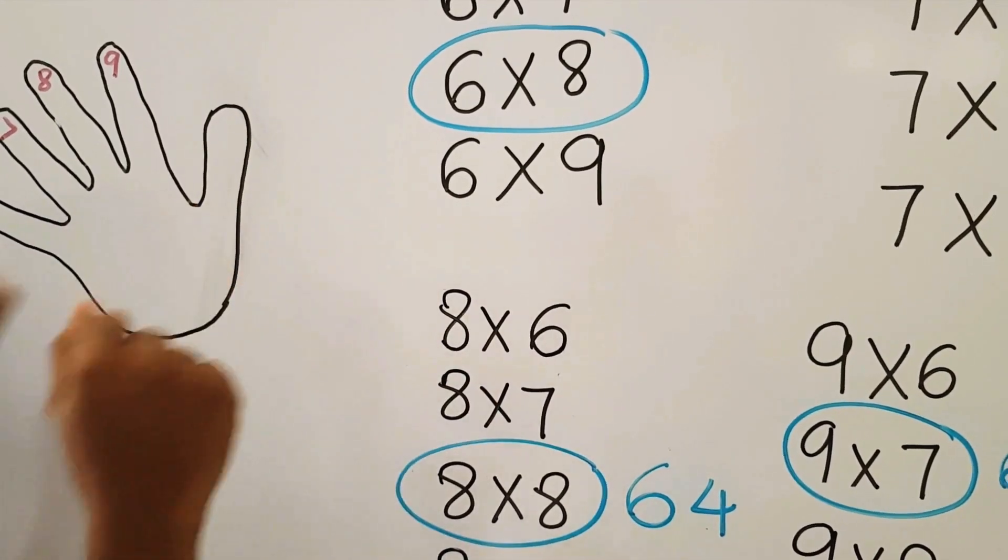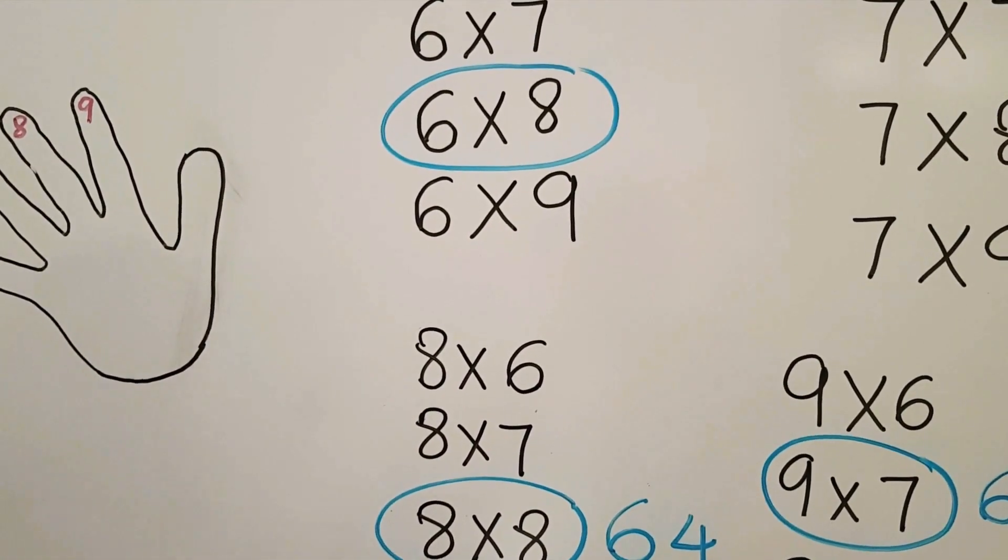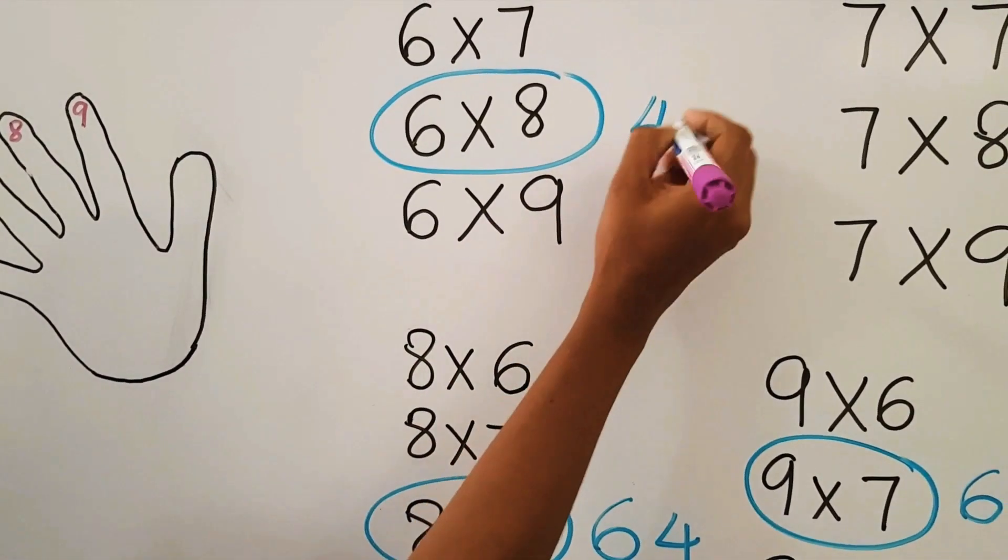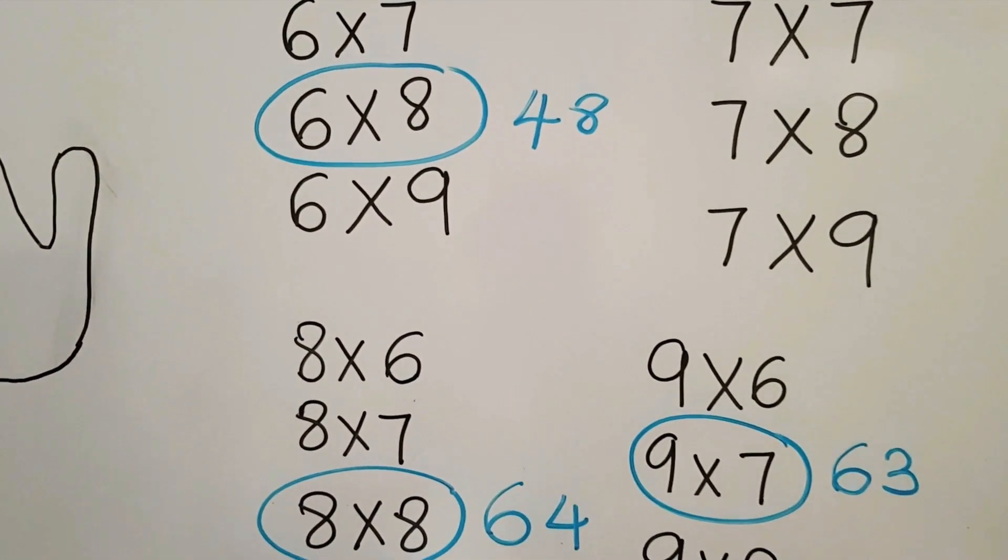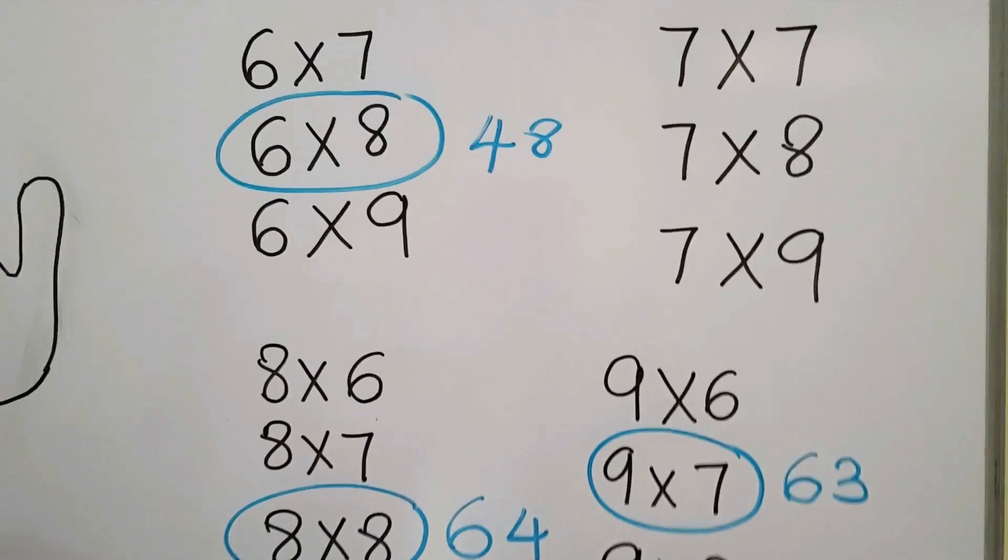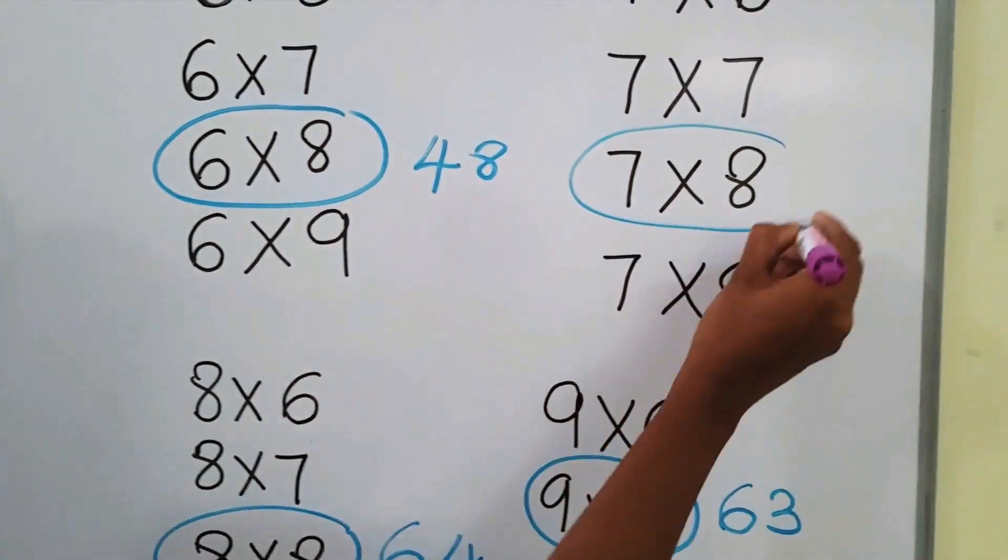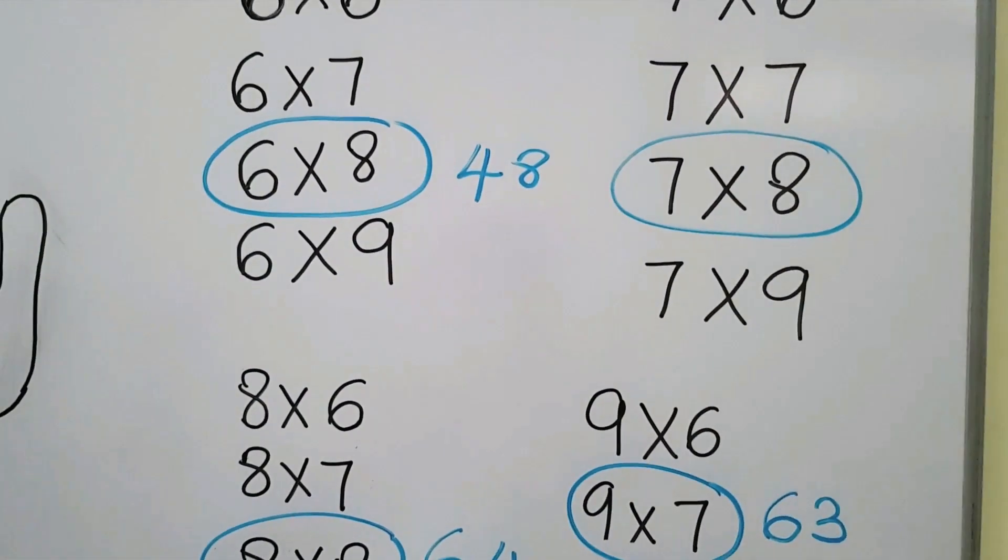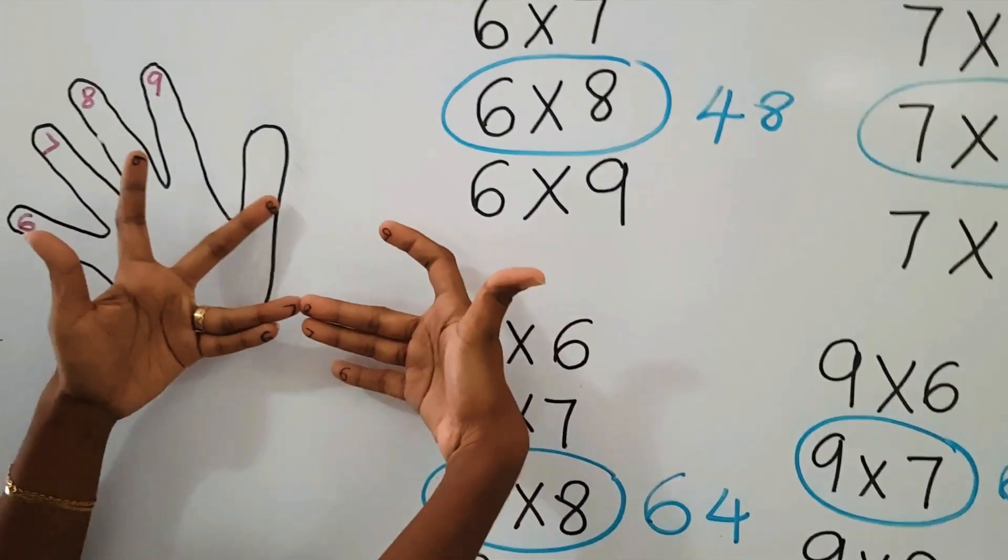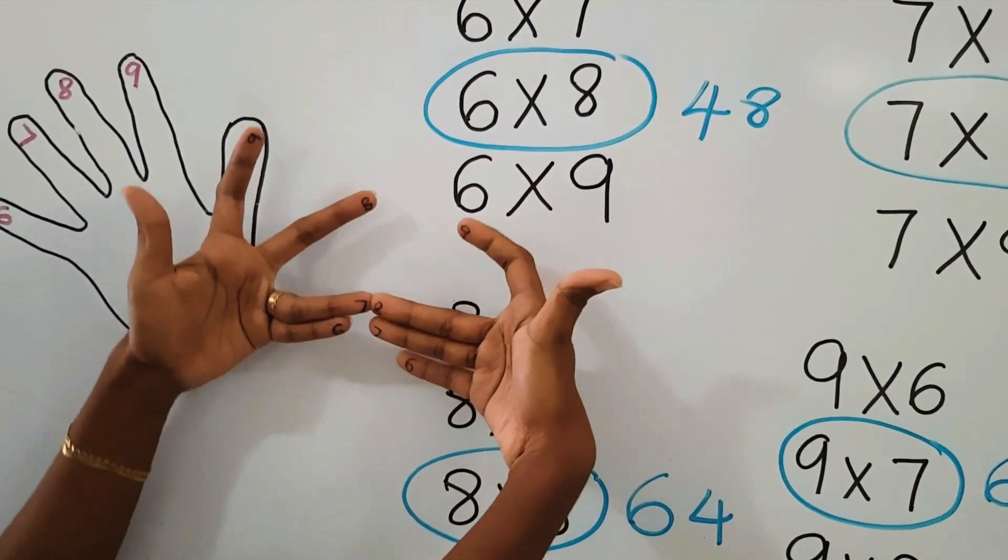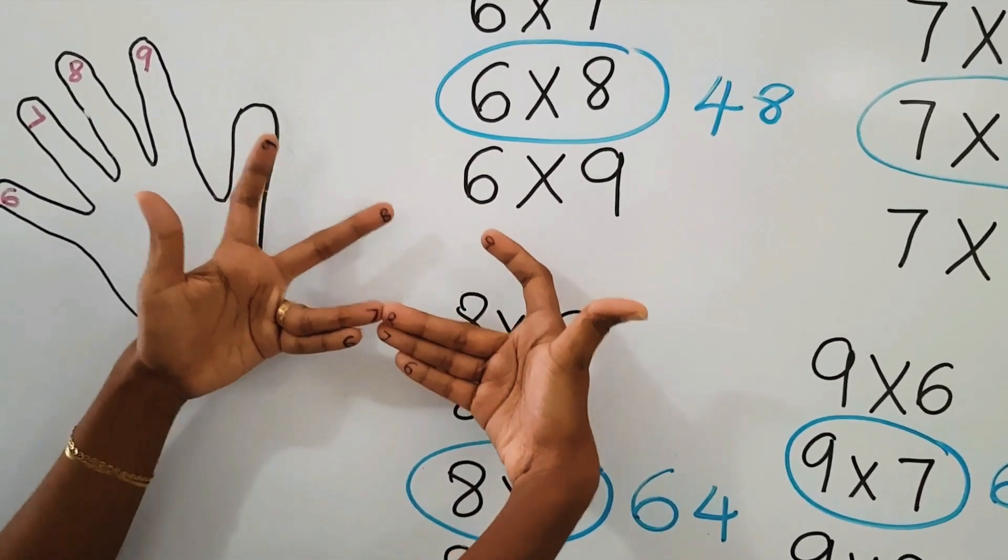So 40 plus 8 will give us 48. It's becoming easy, isn't it? As the final example, let's check 7×8. When we are getting 7×8, so 7 from one hand, 8 from the other hand, we fold all the fingers below.